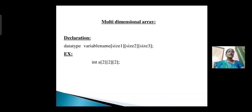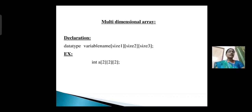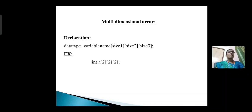Next, multi-dimensional array. In a multi-dimensional array, if an array contains more than one dimension, then that array is called a multi-dimensional array. Declaration: data type, variable name[size1][size2][size3]; Example: int A[size1][size2][size3]; In this array example, we use three subscripts and one variable, so this example is called a multi-dimensional array.